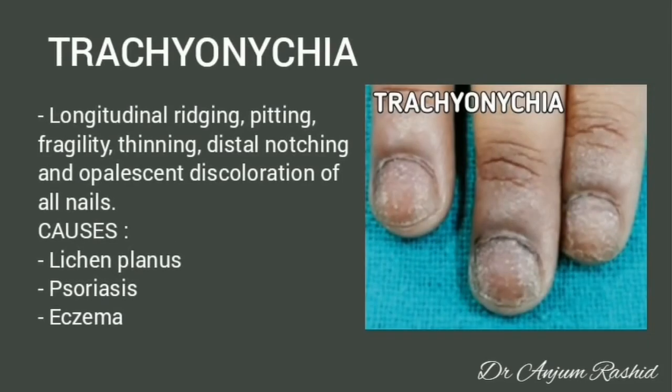Trachyonychia: there is longitudinal ridging, pitting, fragility, thinning, distal notching, and opalescent discoloration of all nails. Causes include lichen planus, psoriasis, and eczema.